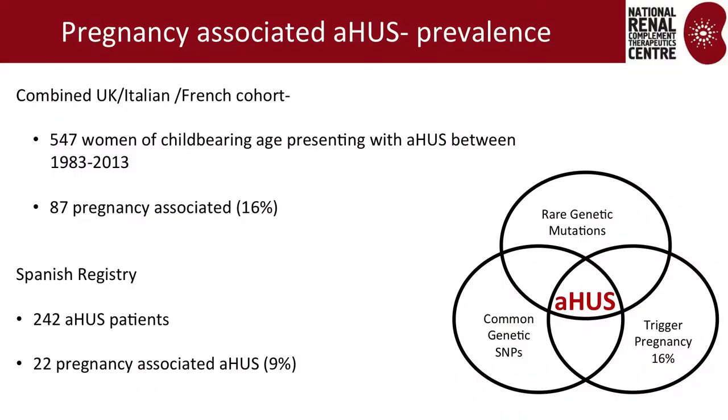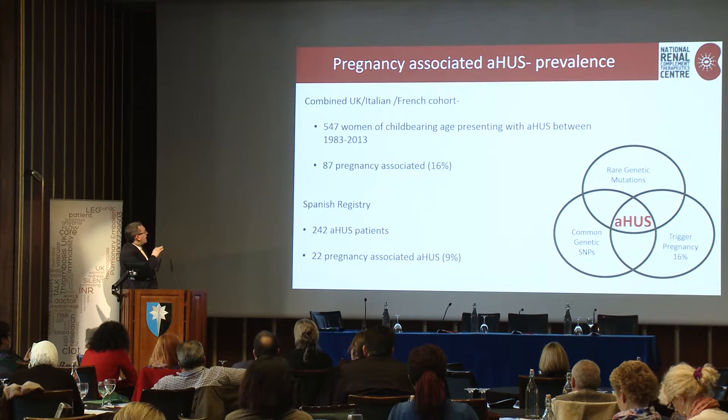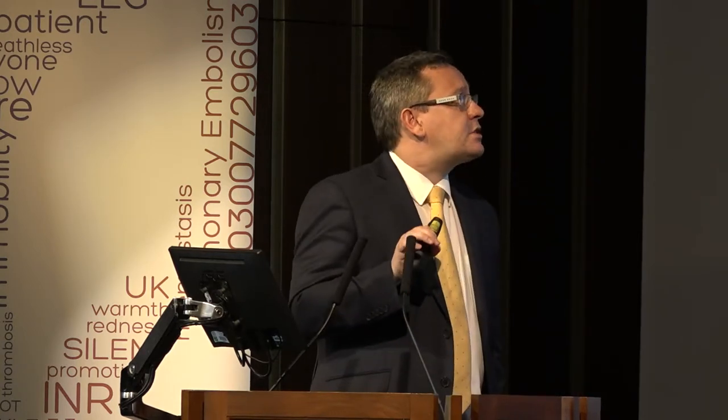The UK, Italy, and France came together — the Spanish were slightly later, which is why there are two different papers. In the larger group, there were about 550 patients of childbearing years who presented over the last 30 years, and 16% were pregnancy-associated. The Spanish cohort, covering all patients not just women of childbearing years, showed a similar percentage. So roughly 16% of females of childbearing years will present with HUS during pregnancy.